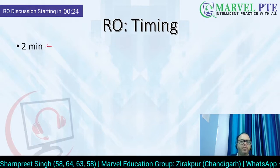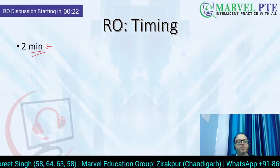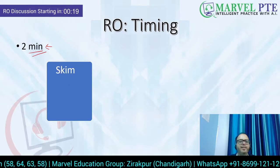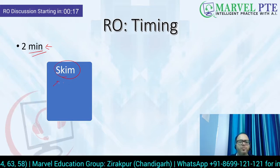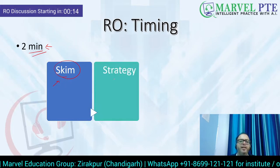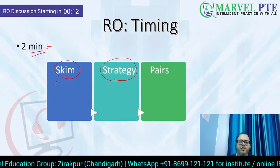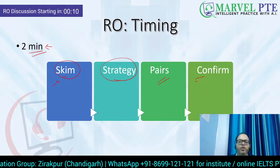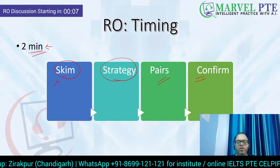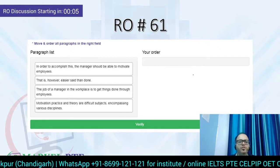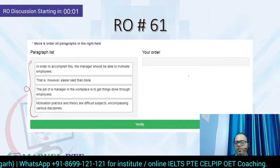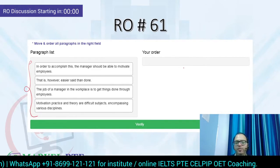Regarding timing: the maximum you can spend on one reorder paragraph is two minutes. In those two minutes, you first have to skim the lines, then apply our strategies, then make pairs, and then confirm whether the pairing you have done is correct or not. This is today's topic, and as usual I'm going to give you 30 seconds — after that we are going to discuss it.